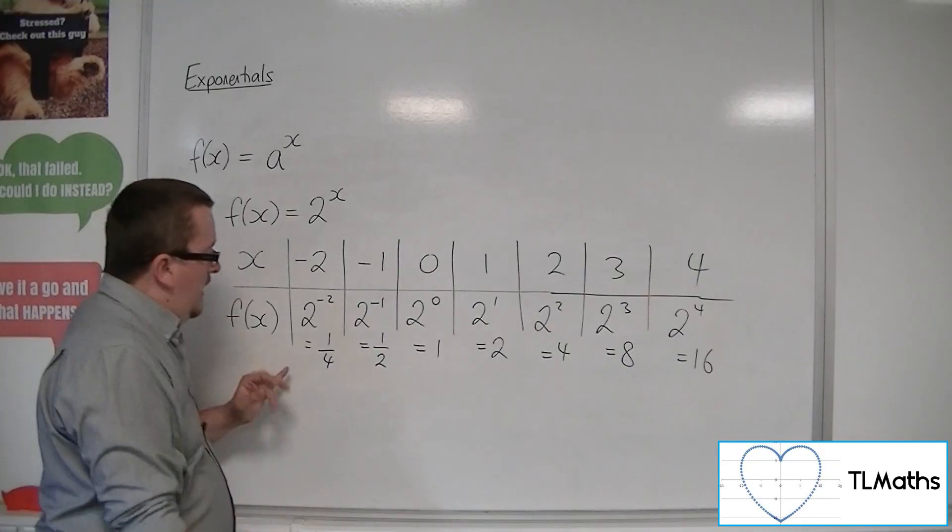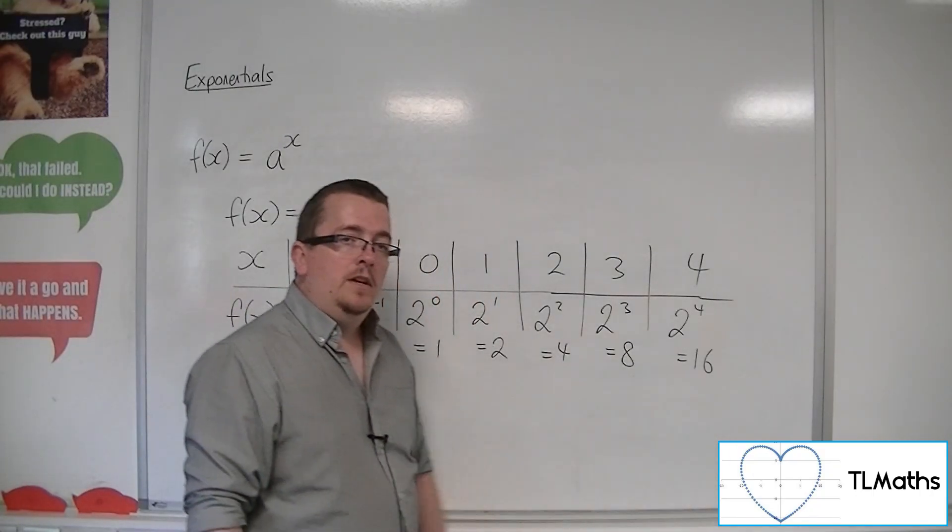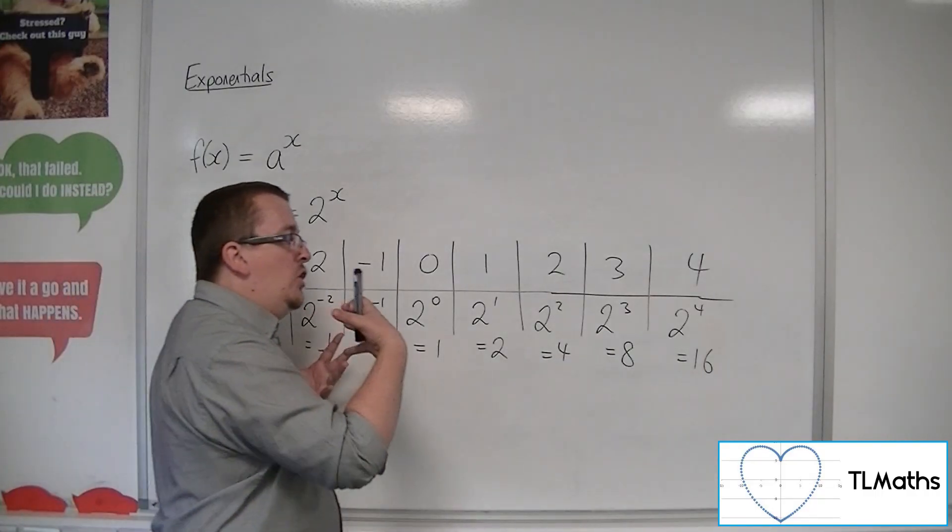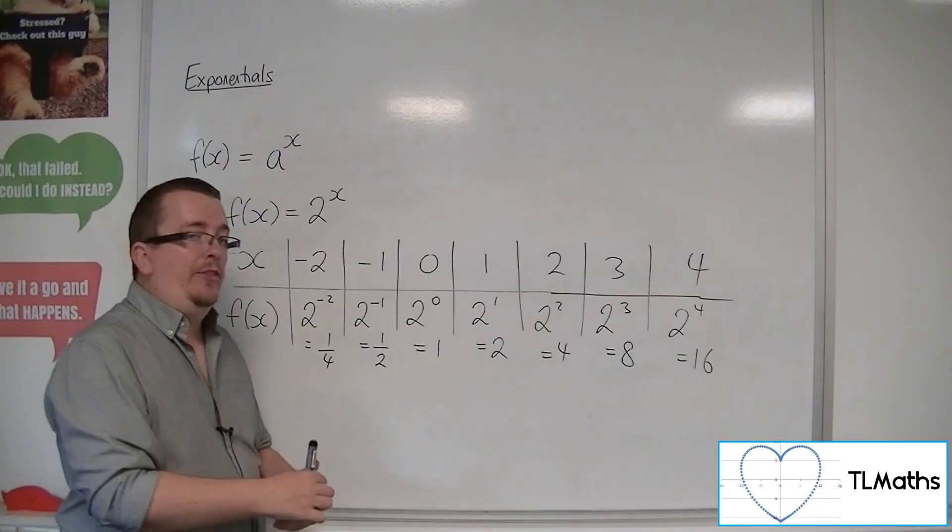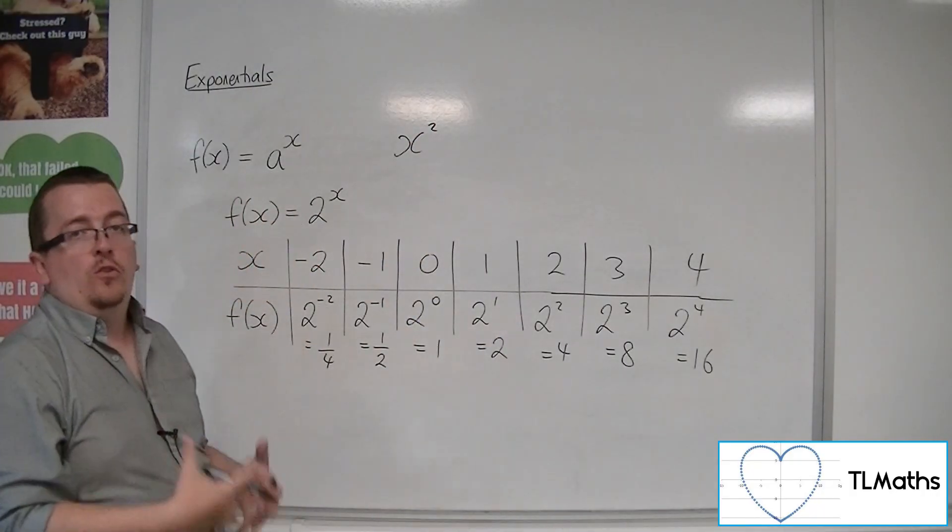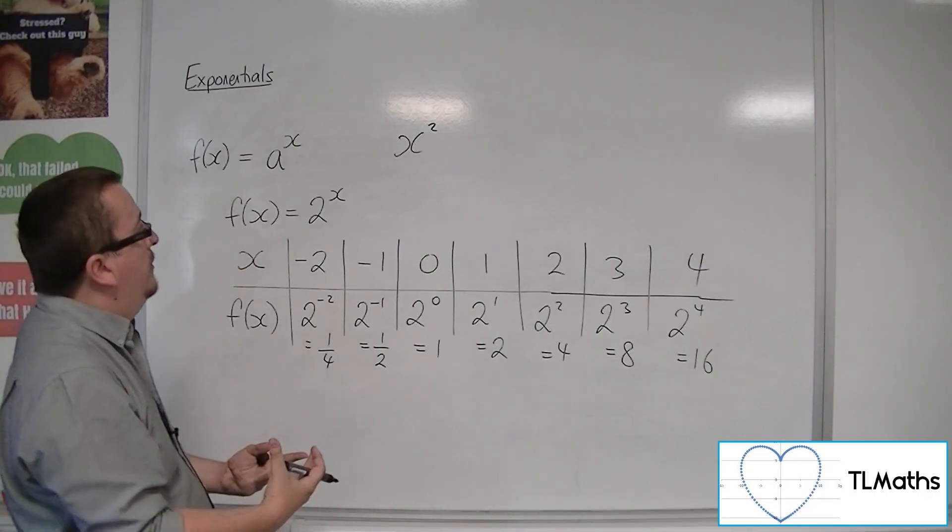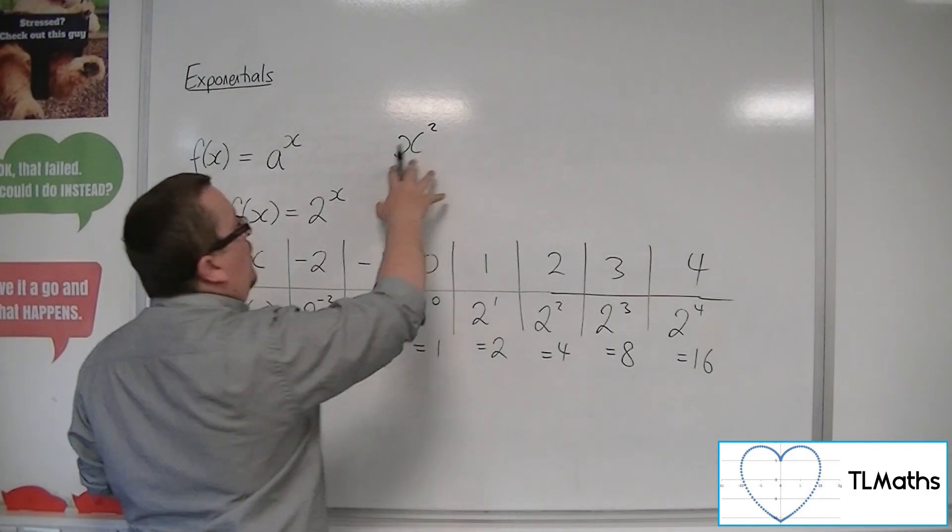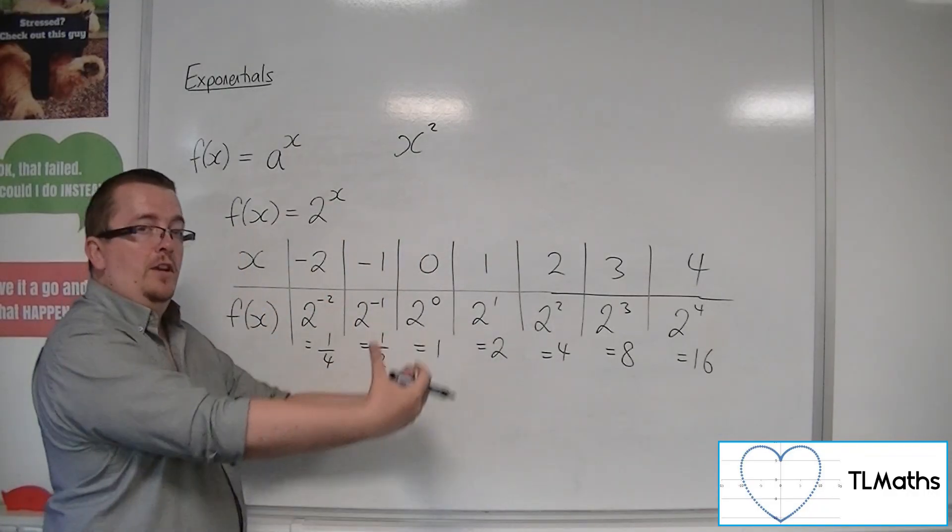And what we can see is that these numbers are doubling each time. And subsequently, they are increasing a lot faster than, say, x squared, for example, or x cubed, or x to the 4, or x to the million, because these values will only be increasing as a polynomial increase.